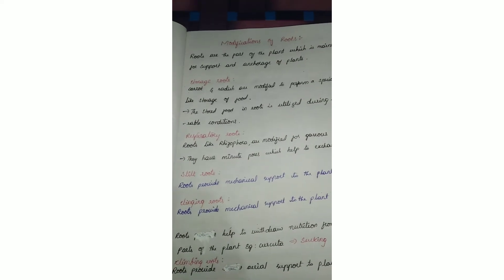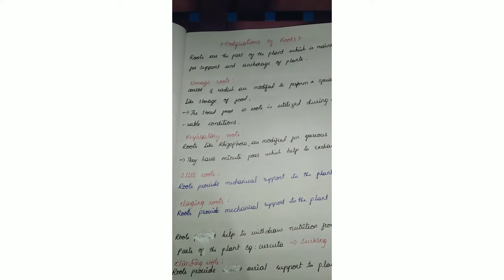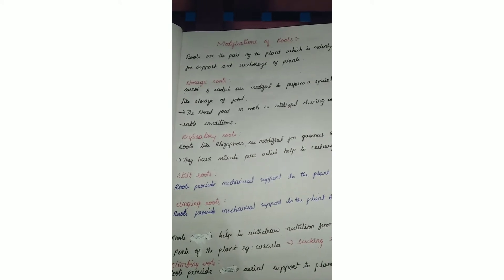First one is storage roots. They store food. Examples are carrot and radish, which are modified to perform special functions like storage of food. These are the roots of that plant.